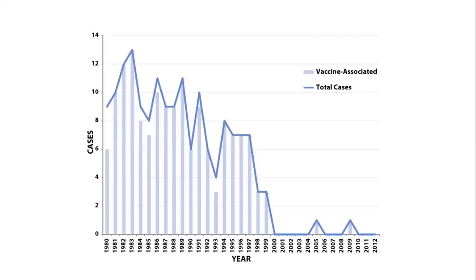Polio is one success story. You can see from the graph how it has affected the USA — the rate shown is per 100,000 people, and you can see the dramatic reduction in polio. Sri Lanka has completely eliminated polio, as has India. It's a huge success, reducing the number of children getting a disease which has a lifelong impact.